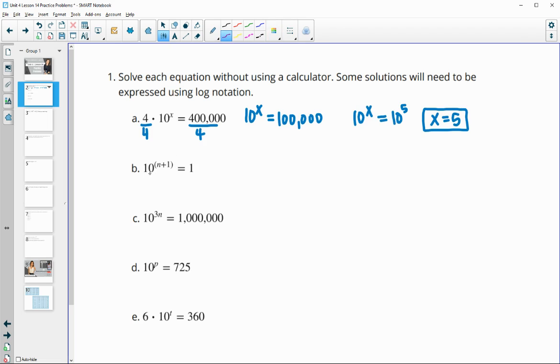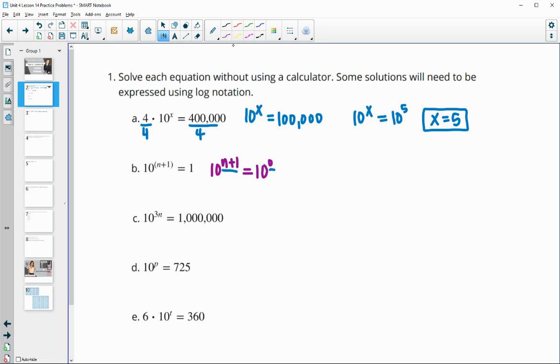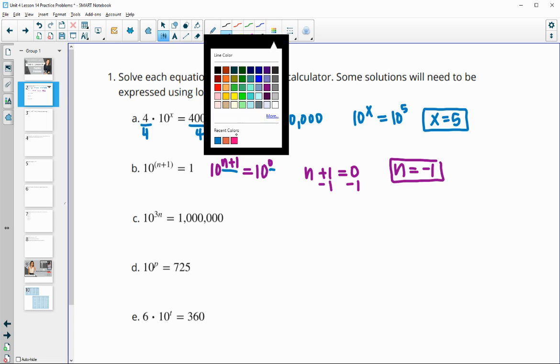Next one, 10 to the n plus 1 equals 1. We can use the idea of getting them in the same base. So 10 to the n plus 1 equals 10 to the 0 power, which is 1. These exponents would equal, so n plus 1 must equal 0. We subtract 1 and get n equals negative 1.